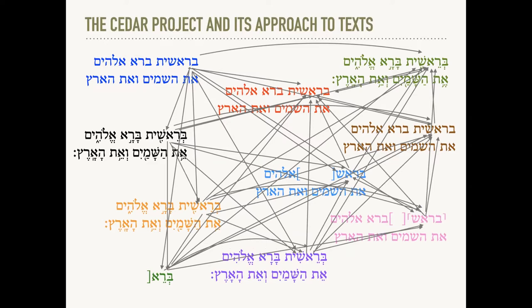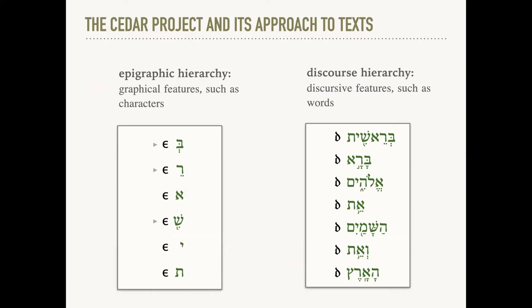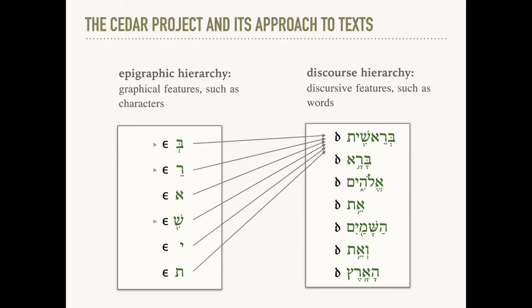A few more words about data structure. Textual data in OCHER are organized into two overlapping hierarchies: an epigraphic hierarchy, which is arranged by material and graphical features such as pages, columns, lines, and characters; and a discourse hierarchy, which is arranged by discursive features such as sentences, phrases, and words — or for biblical texts, books, chapters, verses, and words. The two hierarchies are related by links that tie each character in the epigraphic hierarchy to a word in the discourse hierarchy.